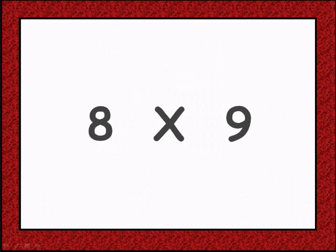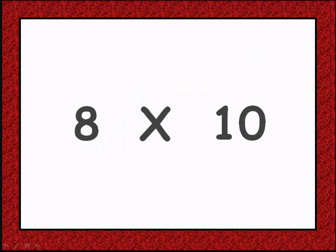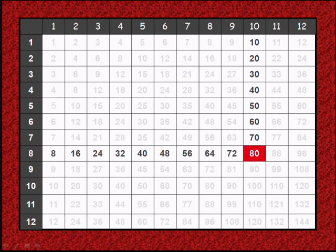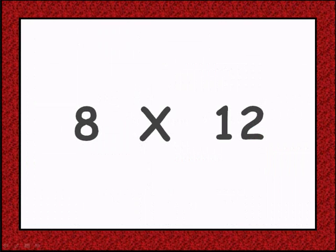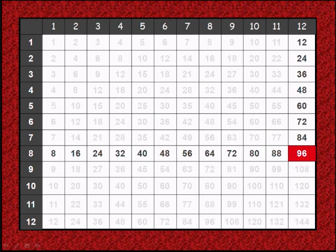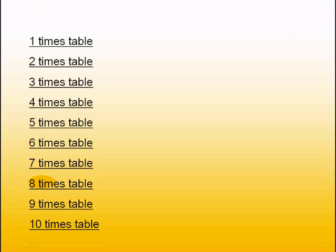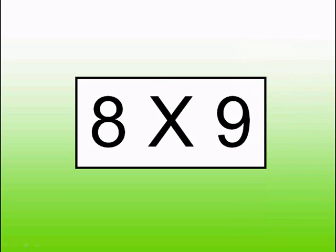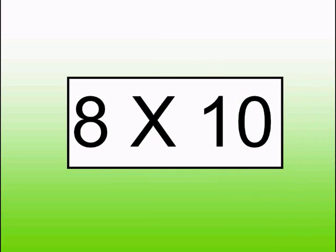8 times 9 is 72, 8 times 10 is 80, 8 times 11 is 88, 8 times 12 is 96. That's it — you are done with your 8 times table! Let's take our random test. 8 times 9 is 72, 8 times 5 is 40.